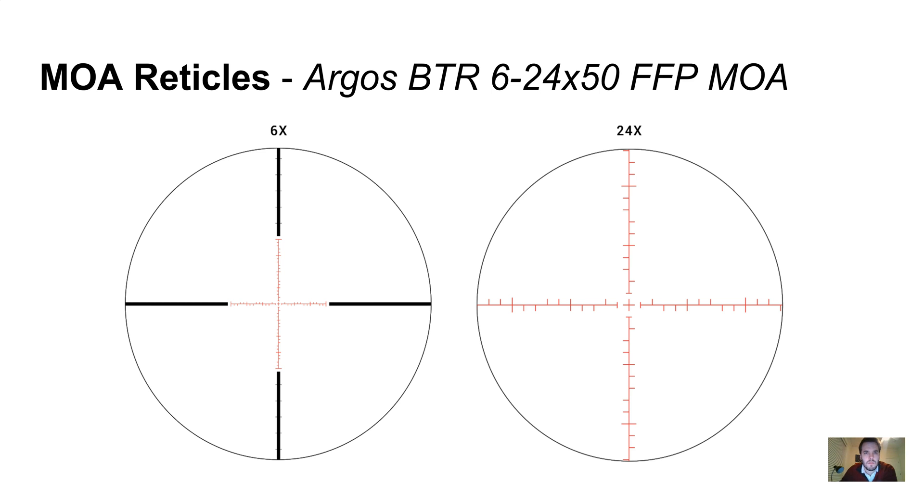Here's an example of an MOA reticle. This is for the Argos BTR MOA 6-24 magnification, which is a great scope if you're looking for a low-cost but feature-packed MOA scope. Each of these hash marks is two MOA. That's how you're going to calculate what the distance is to the target, because you're going to notice where the target lands on these hash marks and use that MOA to calculate how far away the target is.